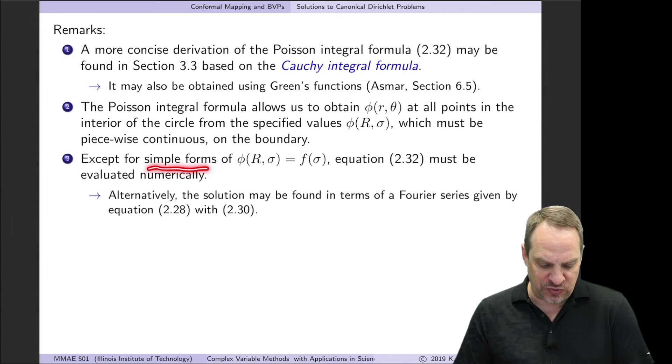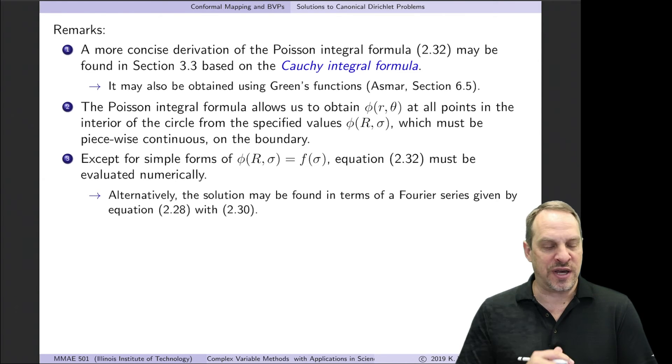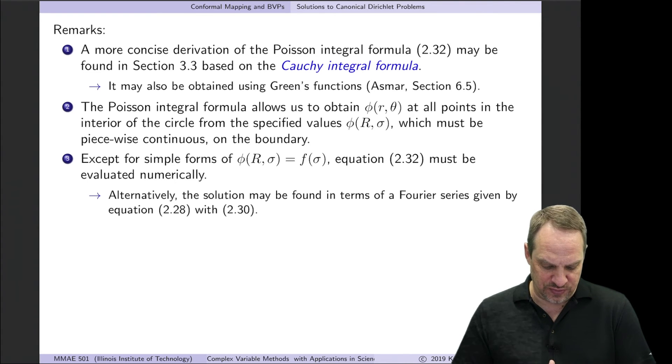Now, except for very simple forms of f of sigma, the boundary conditions, the Poisson integral formula in the circular disk cannot be integrated in closed form. We would have to use numerical methods to approximate the solution. Alternatively, you could use the Fourier series approach that we have shown.